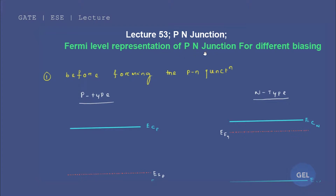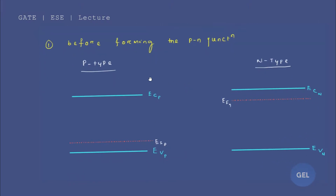We will cover Fermi level representation of PN Junction for different biasing conditions. Before forming the PN Junction, we will see what the Fermi energy level looks like — before and after forming the PN Junction, in both biased and unbiased cases. In P-type, the Fermi energy level is nearer to the valence band, and in N-type, the Fermi energy level is nearer to the conduction band.